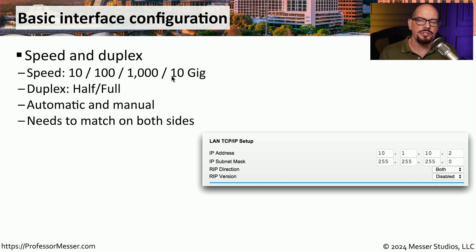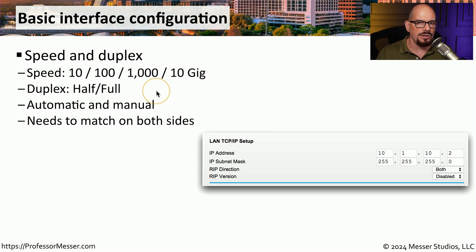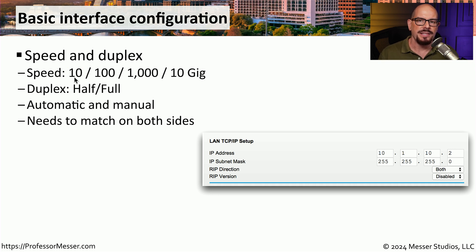We have to be sure that this configuration is the same on both sides. So if we have a computer that's connecting to a switch, the speed on both of them has to be configured the same. In many cases, we would set this to automatically configure itself, so you can simply plug in any device and the switch will automatically adjust to the configured speed. If you have the speeds mismatched on both sides, the connection will not work at all — you'll never get a link light.